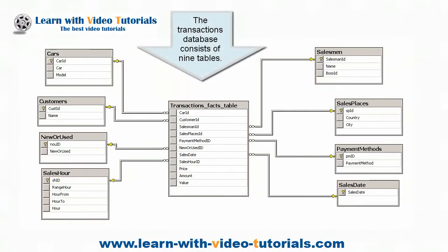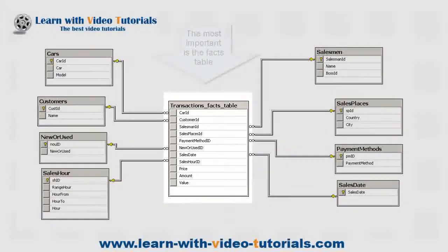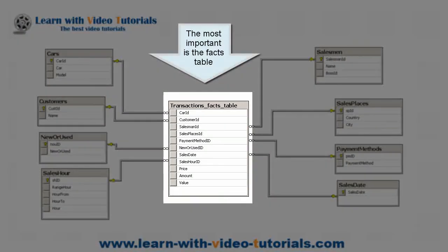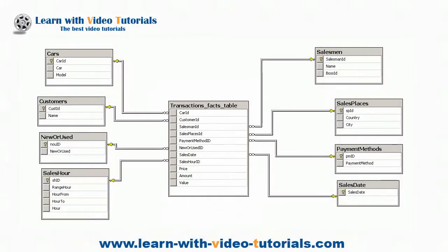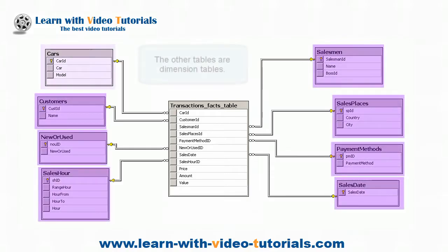The transactions database consists of 9 tables. The most important is the facts table. The other tables are dimension tables.